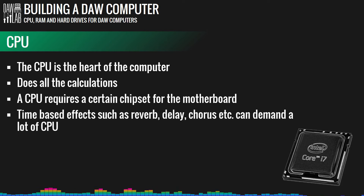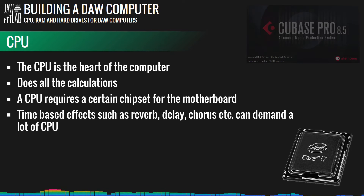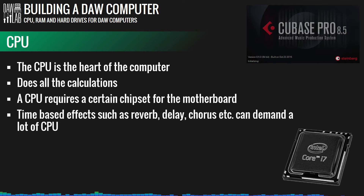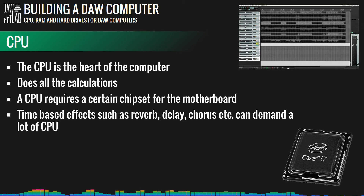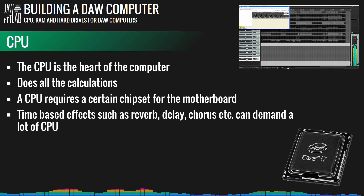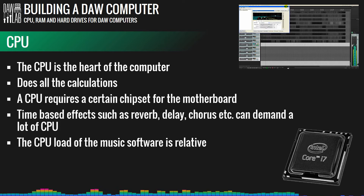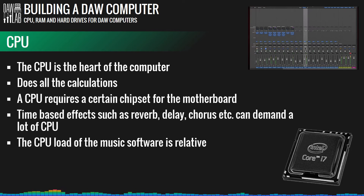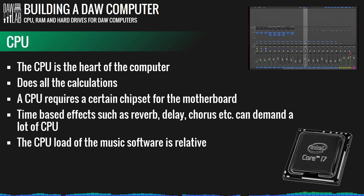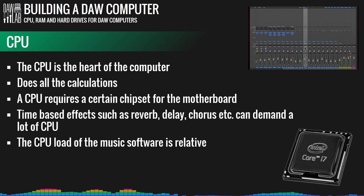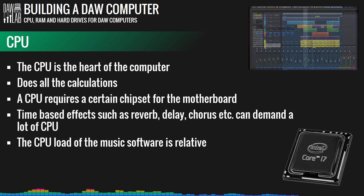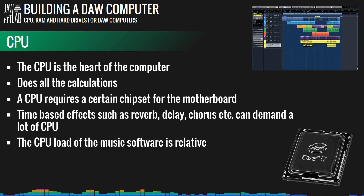The music software or sequencer may have low minimum system requirements to run, but the CPU power actually used depends on the workload of the project — the number of plugins, effects, and audio tracks running at the same time. You should never choose a CPU based on the minimum requirements of a music software unless you're on a very tight budget.